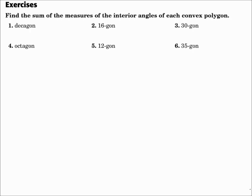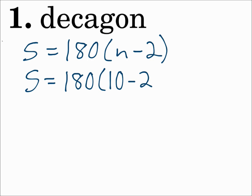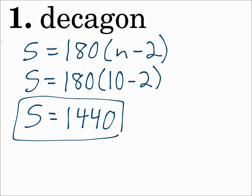Find the sum of the measures of the interior angles of each convex polygon. Number 1 is a decagon. Since we're looking for the sum of all of the interior angles, we'll use the formula S equals 180 times N minus 2. For a decagon, N is 10. So 180 times 10 minus 2 is 1,440.